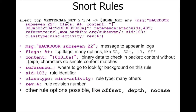The 'reference' option points to where you can find background information on this rule. 'sid: 103' is the rule identifier. 'classtype' refers to the category of activity — for example, miscellaneous activity. There is also a revision number. Other rule options such as offset, depth, and nocase can also be applied in Snort rules.